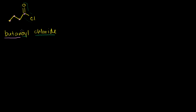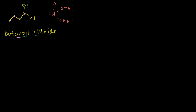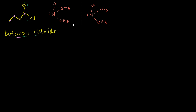So let's think about what would happen if we have a solution of butanoyl chloride, and for every molecule of butanoyl chloride we had two molecules of dimethylamine. Let me draw that — dimethyl, so two methyl groups, and then we have one hydrogen. We're going to have two molecules of this for every one molecule of our butanoyl chloride, so let me copy and paste this. So let's think about what would happen in a solution with these reactants in this ratio.